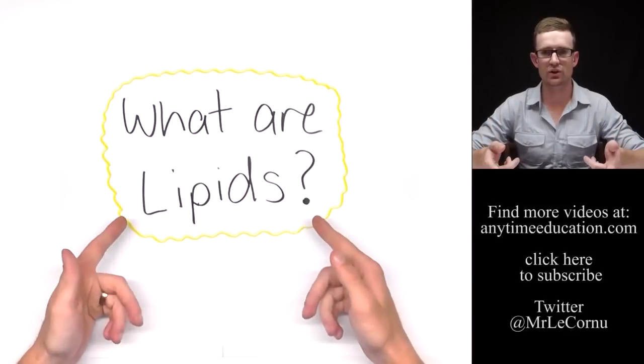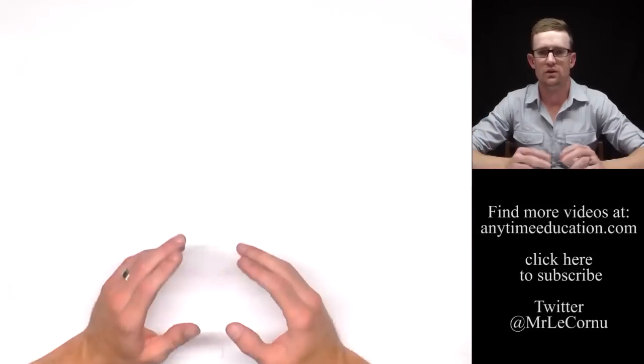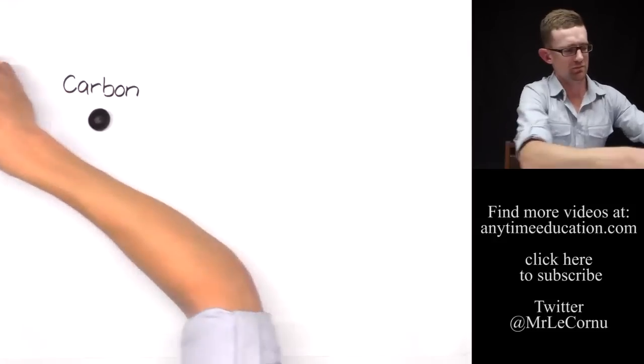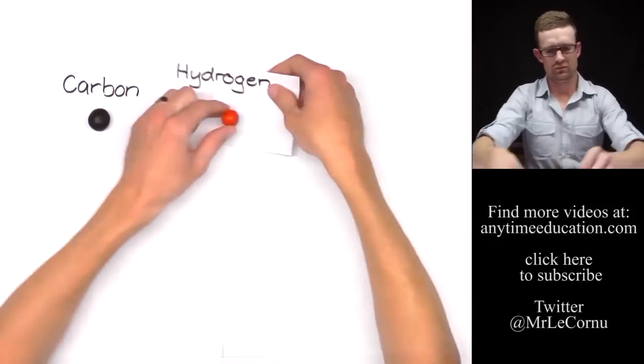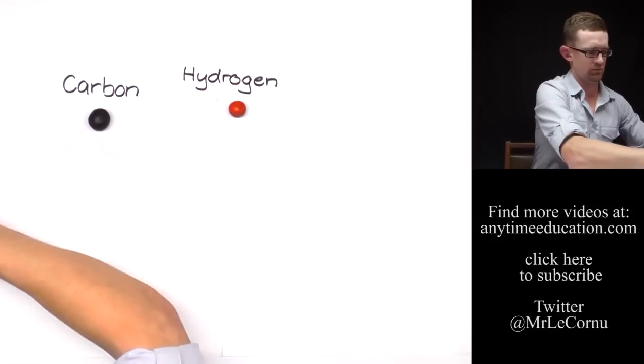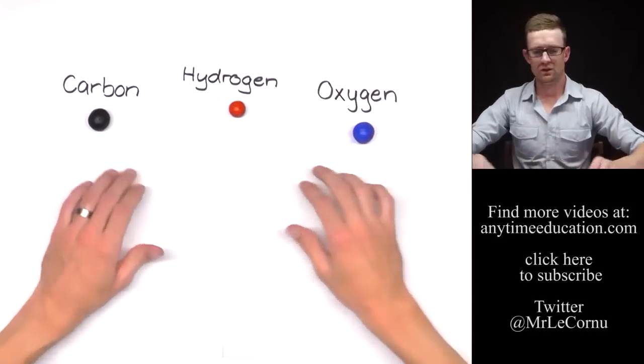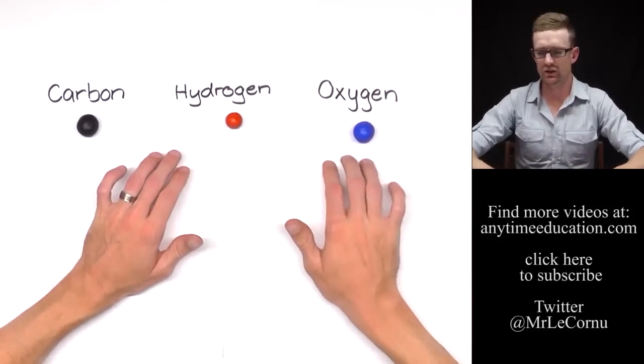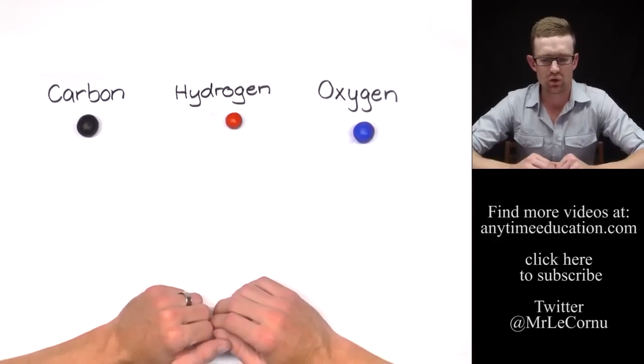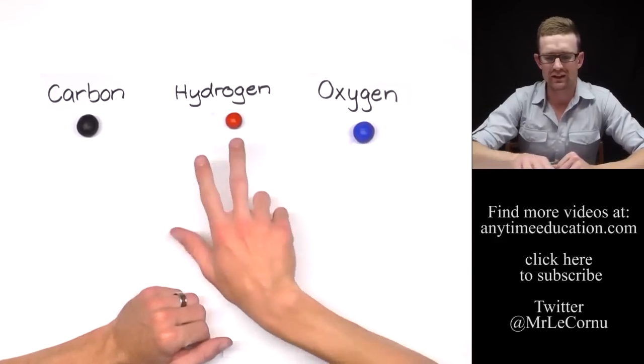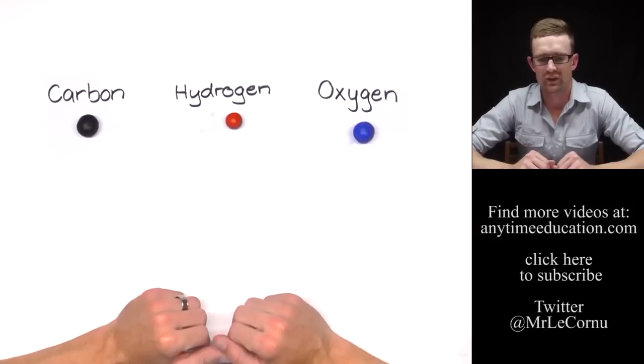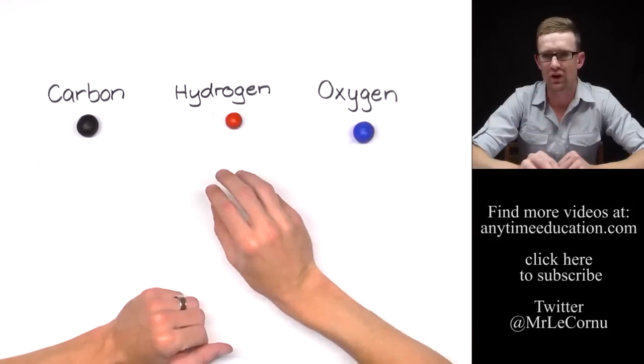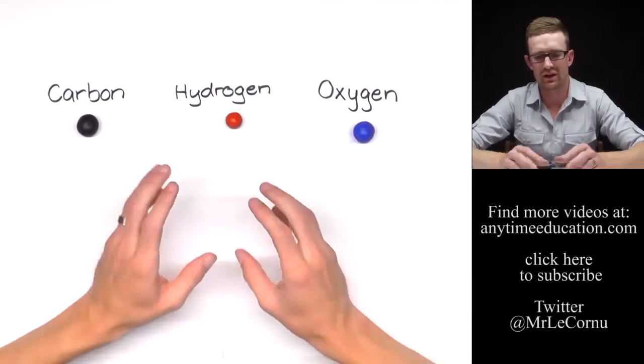So in this lesson I'm going to tell you all about lipids. First of all, lipids are made of carbon, hydrogen and oxygen, and you might be thinking, well that sounds similar to carbohydrates. Well in carbohydrates there are two hydrogens to every oxygen. In lipids there are far more than two hydrogens to every oxygen.